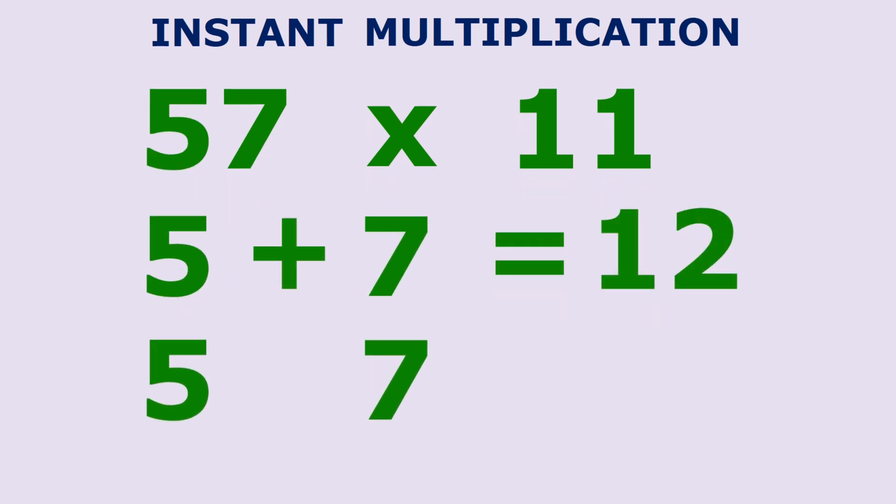Here is another example. Try 57 x 11. Since 5 plus 7 is equal to 12, the 2 goes in between the numbers and the 1 will be added to 5 to get the correct answer, i.e. 627.